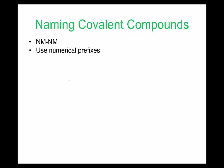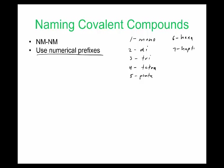Naming covalent compounds is actually pretty easy — they use numerical prefixes. One = mono, two = di, three = tri, four = tetra, five = penta, six = hexa, seven = hepta, eight = octa, nine = nona, ten = deca. The higher ones are rare since molecules get unstable. The most common are one through five. One important rule: do not use 'mono' on the first atom.